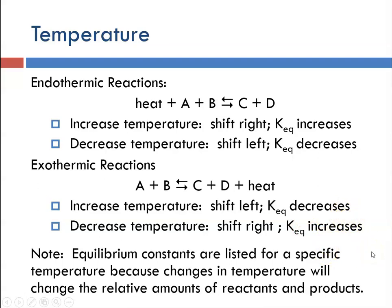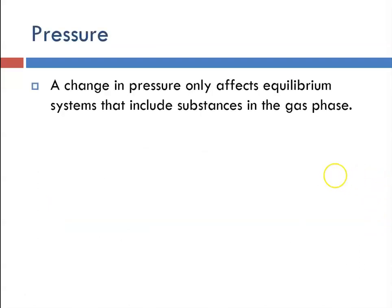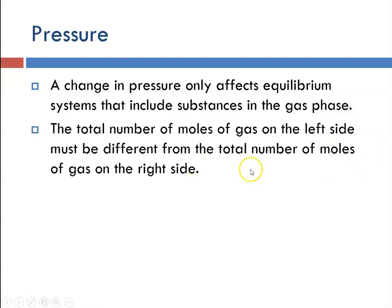Note that equilibrium constants are listed for specific temperatures, because changing the temperature will change the relative amounts of reactants and products. A change in pressure really only affects equilibrium systems that include substances in the gas phase, and only when the total number of moles of gas on the left side is different from the total number of moles of gas on the right side.